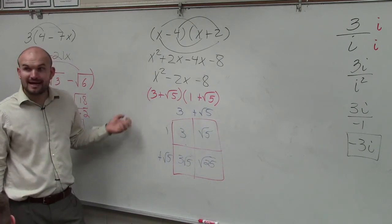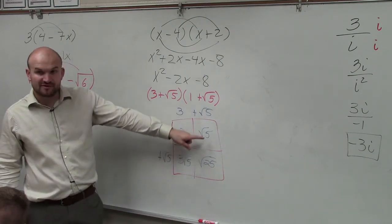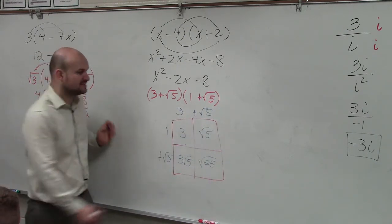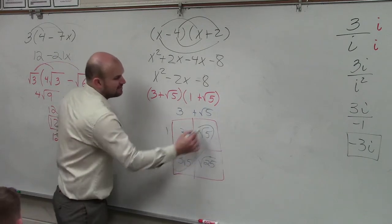So now, again, we notice that square root of 5 and square root of 5, those have the same index. They're both square roots. And they both have the same radicands. So therefore, I can combine these.